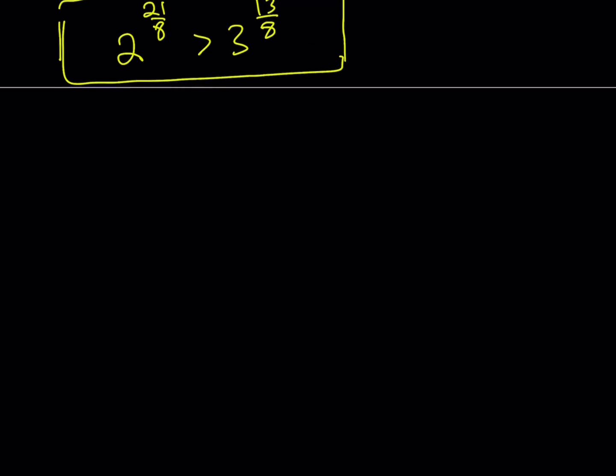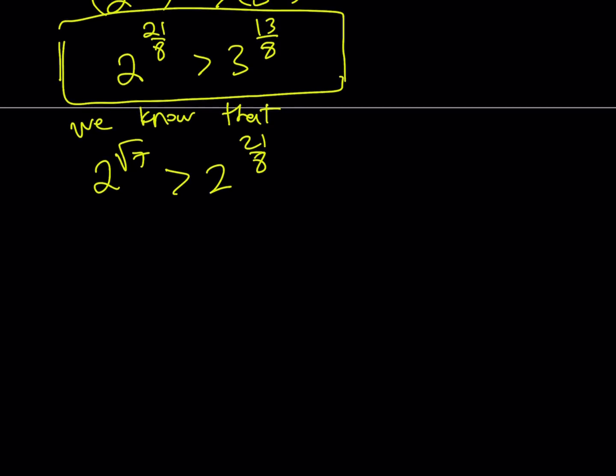Let's go ahead and bring that here. 2 to the power root 7, we know that 2 to the power square root of 7 is greater than 2 to the power 21 eighths. And 2 to the power 21 eighths is greater than 3 to the power 13 eighths. And this basically implies by using the transitive property, this shows that 2 to the power root 7 is greater than 3 to the power 13 eighths.